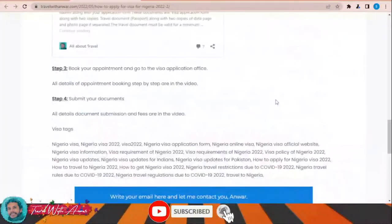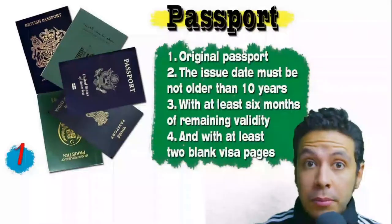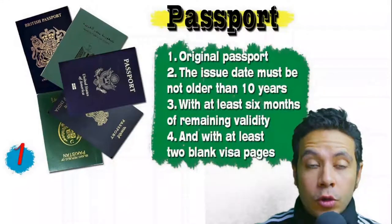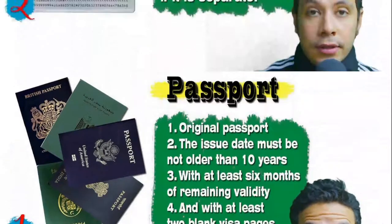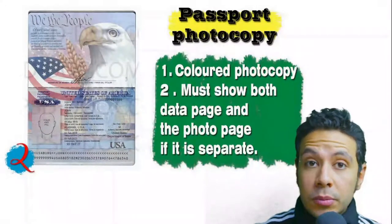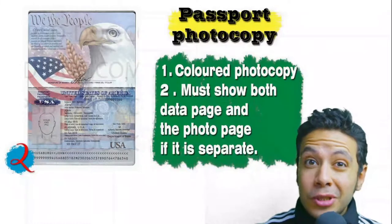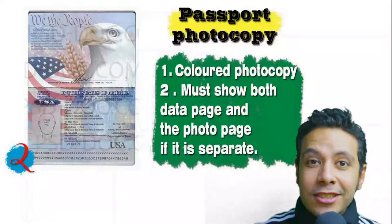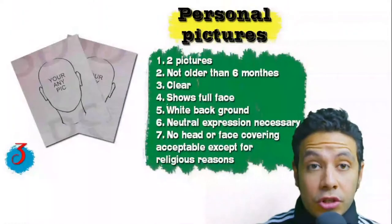Now, what are the required documents? Regarding your passport: it must be original, must not be older than 10 years, with at least six months of remaining validity and at least two blank visa pages for stamps. In many cases you will also need a passport photocopy — it might be one copy or more — preferred to be colored, showing both the data page and photo page.